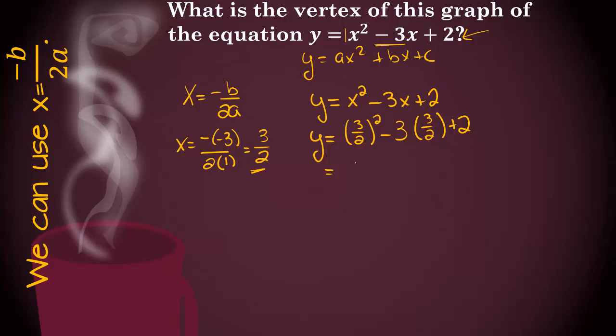And we just need to start simplifying here. So 3 halves squared is 9 fourths minus. Remember, this is over 1. So it's going to be minus 9 over 2 plus 2.